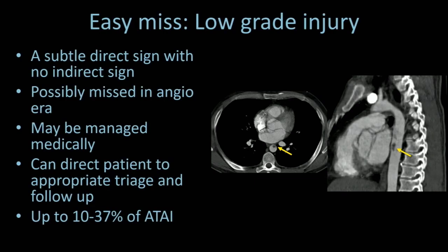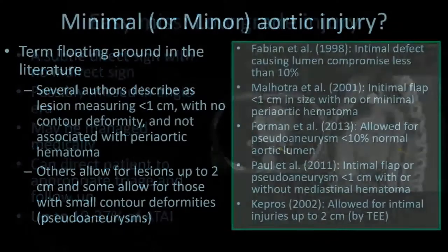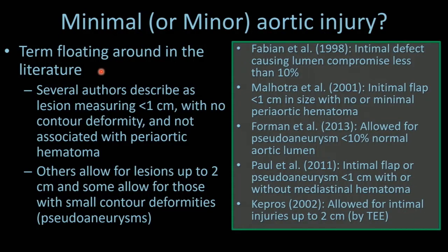Low-grade aortic injuries, sometimes called minimal aortic injuries, don't really have a consensus definition. You might think of them as a subtle direct sign with no indirect sign. They were possibly missed in the angio era. They may be medically managed. They represent an increasing number of recognized acute traumatic aortic injuries, up to 37%. The term minimal aortic injury doesn't have a good consensus definition.